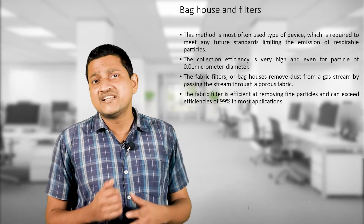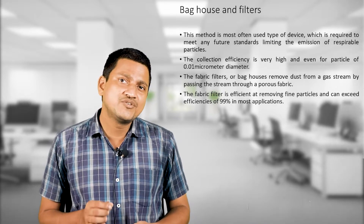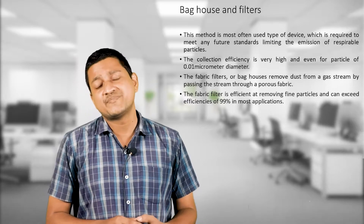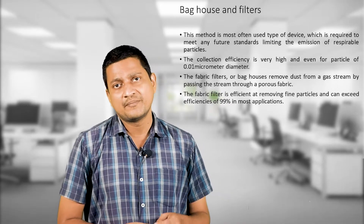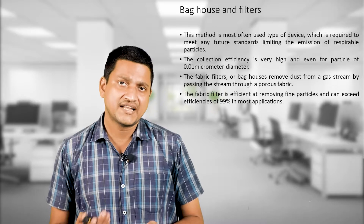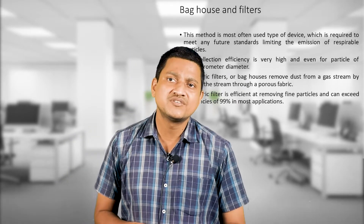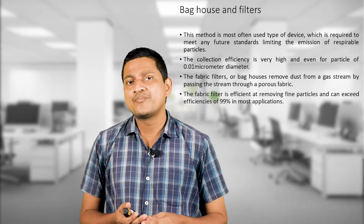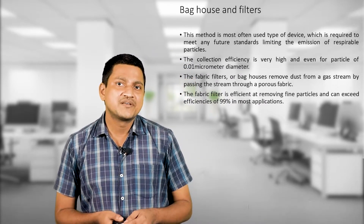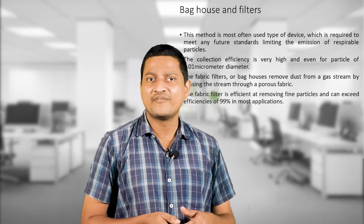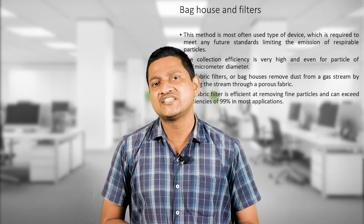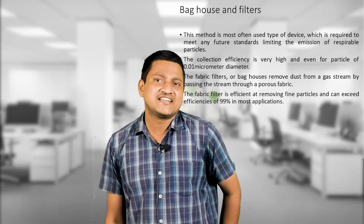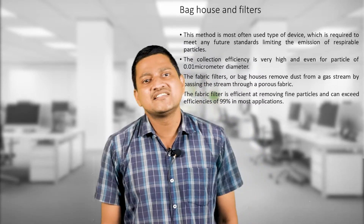The next type of controlling device is the baghouse and filters. This method is most often used and is required to meet future standards limiting the emission of respirable particles. The collection efficiency is very high — even particles of 0.01 micron diameter are collected. Fabric filters or baghouses remove dust from the gas stream by passing the stream through a porous fabric, similar in principle to a mask used to prevent coronavirus. The fabric filter can exceed efficiencies of 99% in most applications.